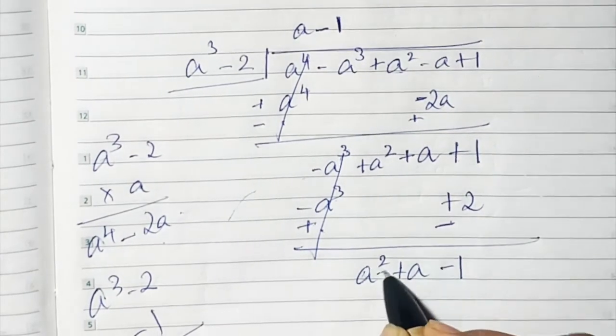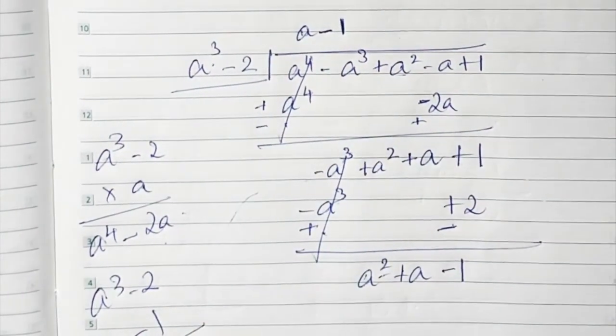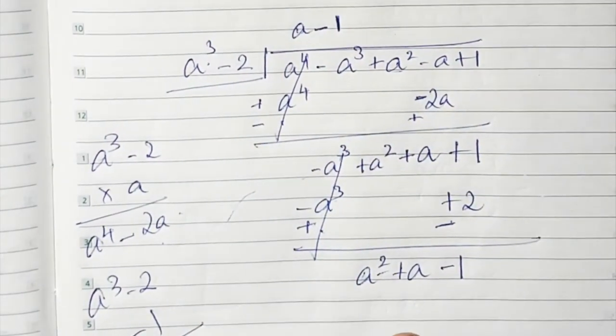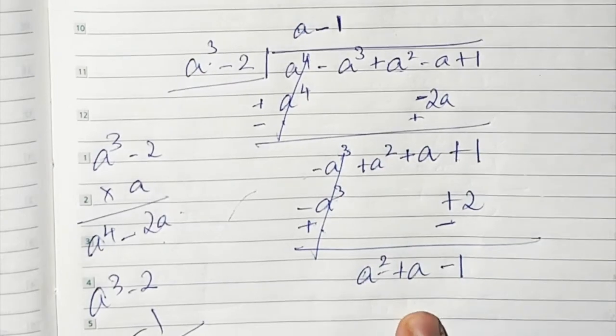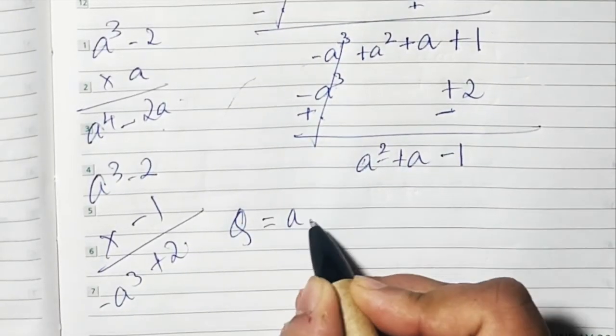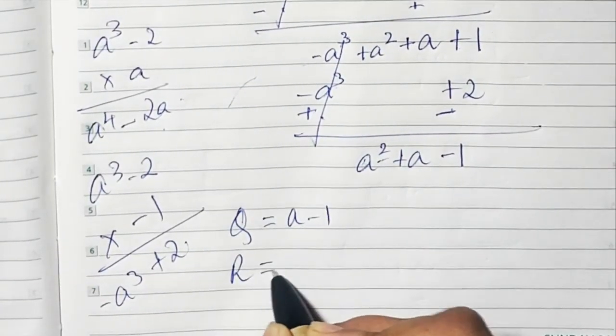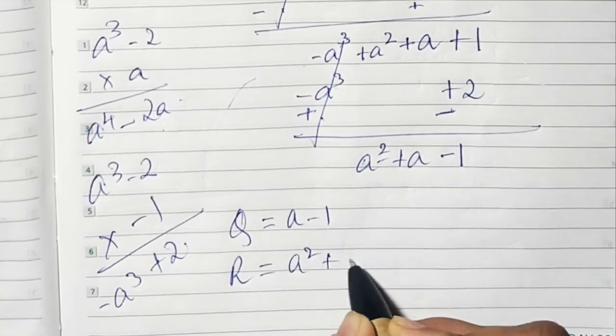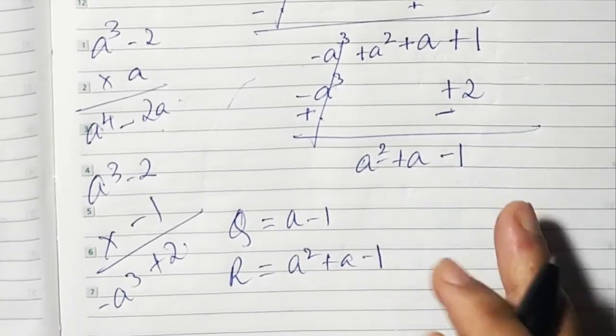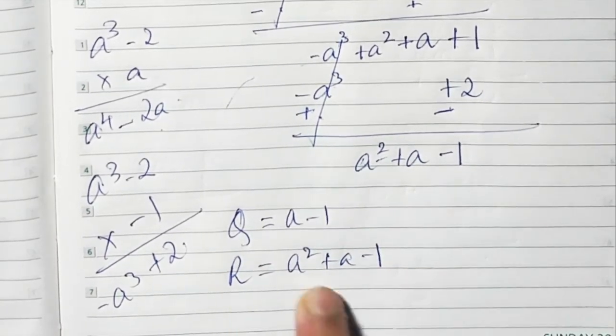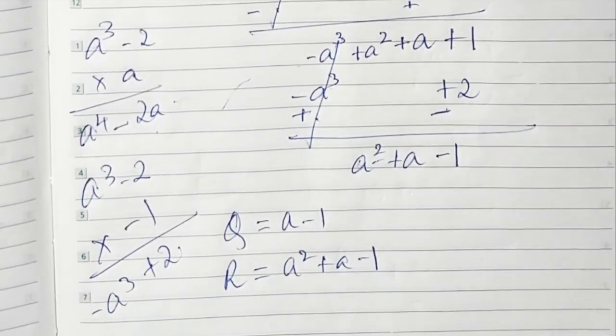a² comes down, +a comes down, and +1 - 1 = 0... wait, +1 - 1 gives -1? Actually 1 minus 1 is 0 but we have a² + a - 1 remaining, which is smaller degree than a³ - 2, so we cannot carry on further. The quotient is a - 1 and the remainder is a² + a - 1.